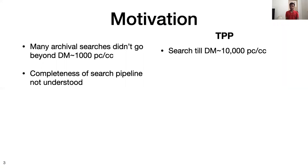The completeness of the search pipelines hasn't also been clearly understood in the past. People already knew what they were finding — single pulses or FRBs — but they didn't actually know what things they were missing. Typically the searches are done over different widths and DMs and you don't know at which parameter values your pipeline is very less sensitive. For the TPP team, we are part of this sensitivity analysis of search software effort, which was started by Liam Connor last year, to characterize the completeness of different single pulse search pipelines.